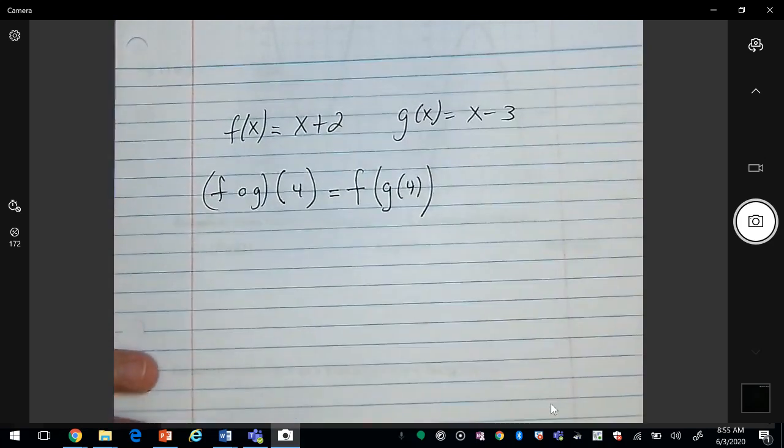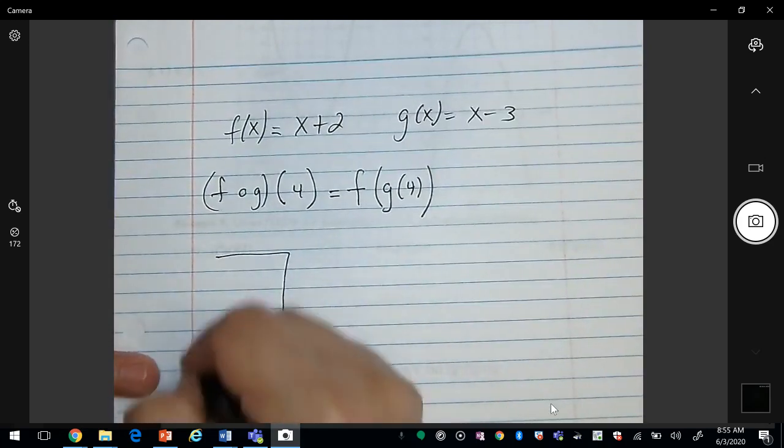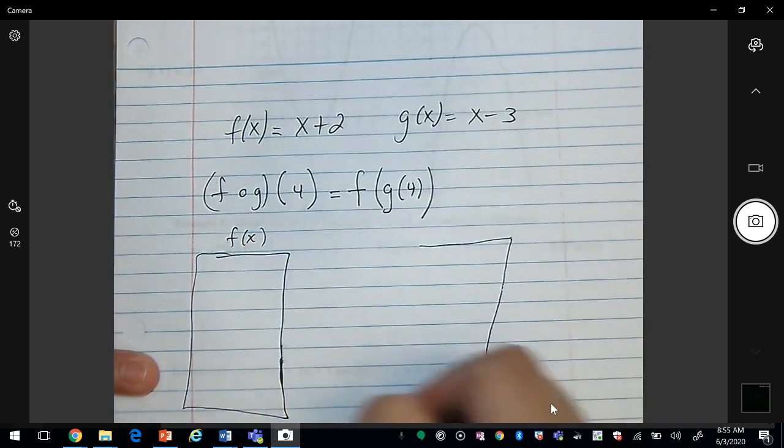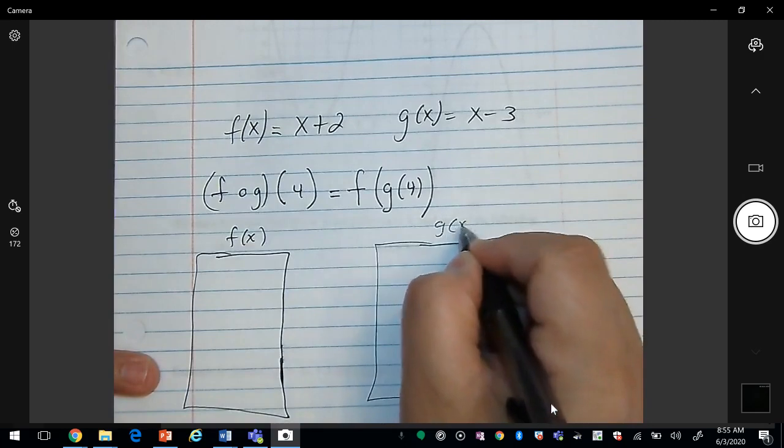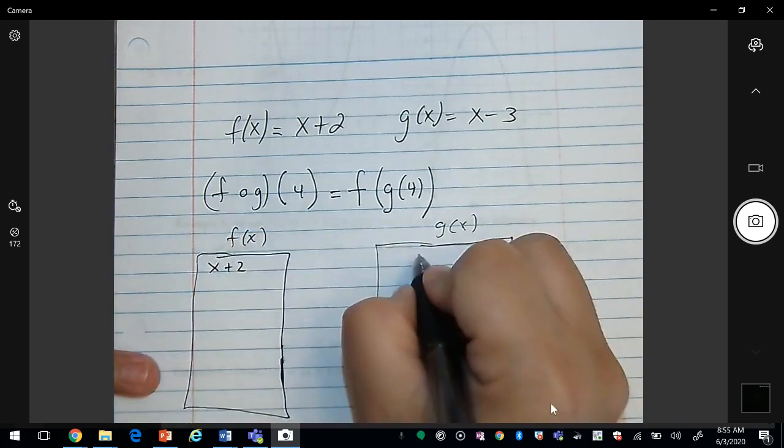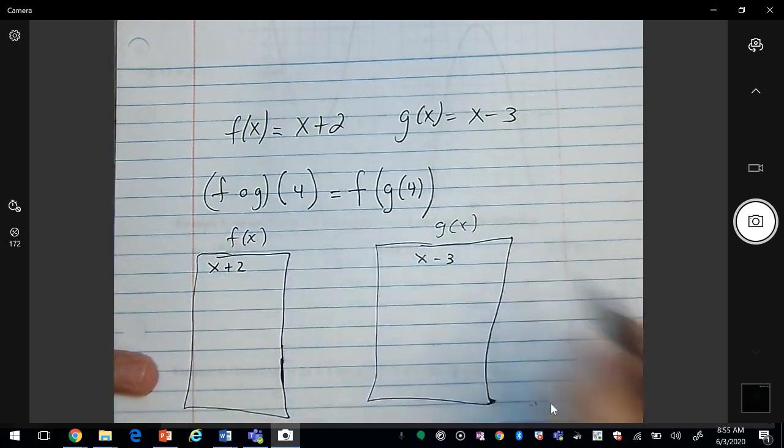And so what's going on here is, let's say you had two machines. This is your f of x machine, and then this is your g of x machine. And so inside of this machine, you have the following x plus 2, and over here you have x minus 3.